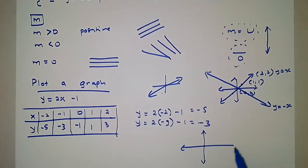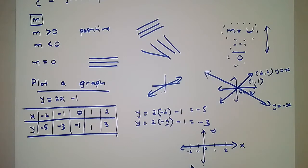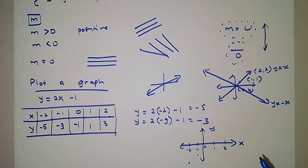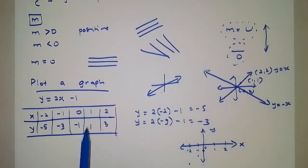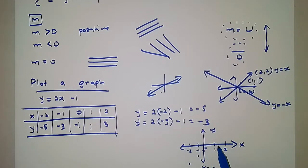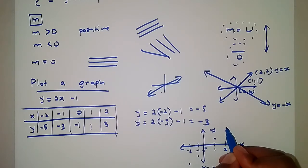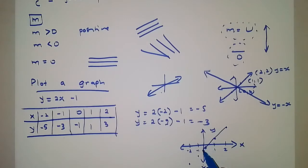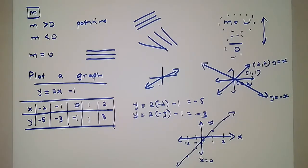When we plot these points on the graph: at x = -2, y = -5; at x = -1, y = -3; at x = 0, y = -1; at x = 1, y = 1; at x = 2, y = 3. After joining these points, you get a straight line graph. That is how you do this using the method of plotting.